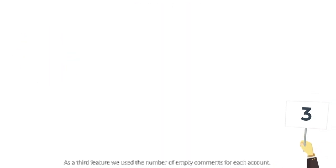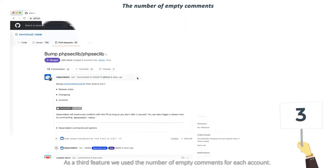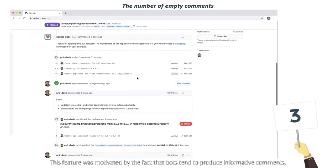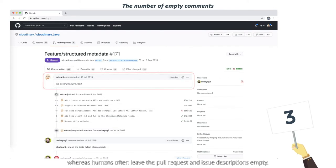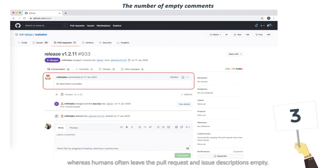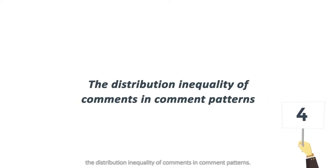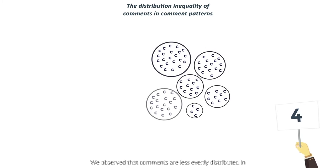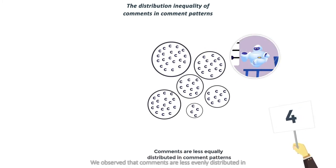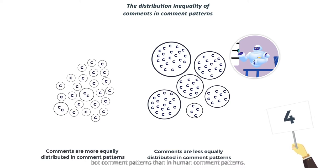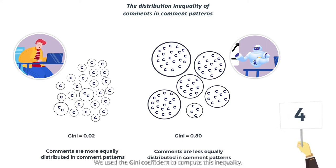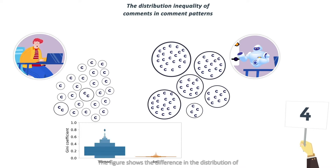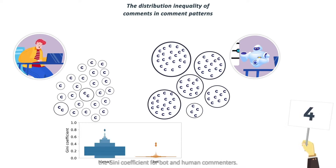As a third feature, we used the number of empty comments for each account. This feature was motivated by the fact that bots tend to produce informative comments, whereas humans often leave pull requests and issue descriptions empty. A fourth distinguishing feature was the distribution inequality of comments within comment patterns. We observed that comments are less evenly distributed in bot comment patterns than in human comment patterns, and we used the Gini coefficient to compute this inequality. The figure shows the difference in the distribution of Gini coefficient for bots and human commenters.